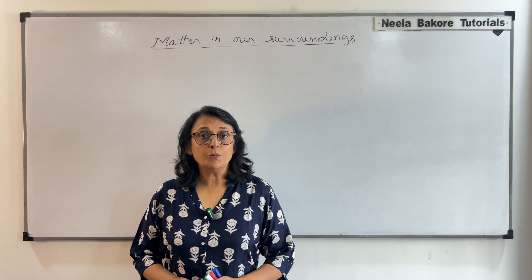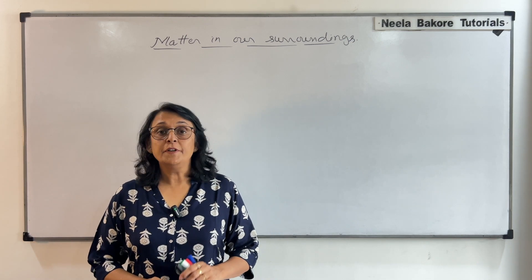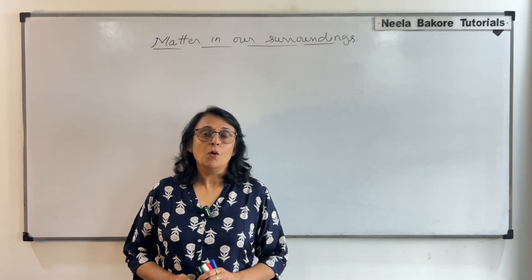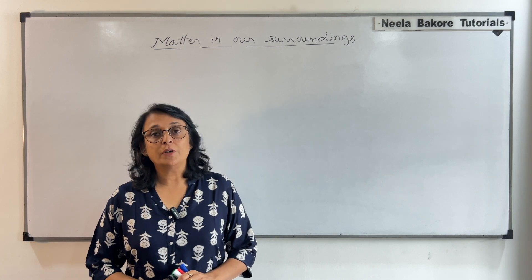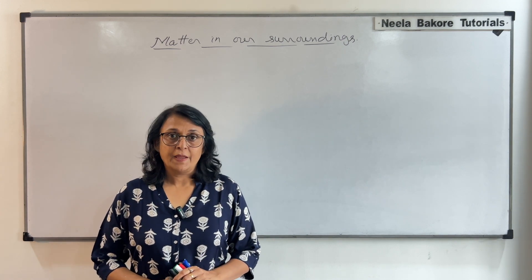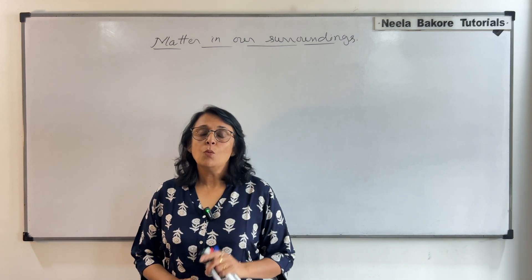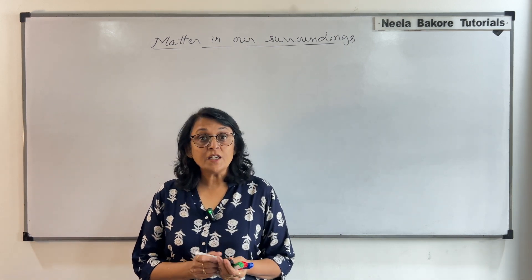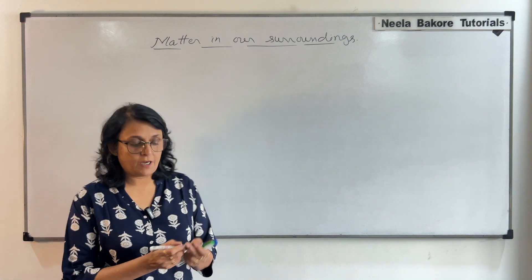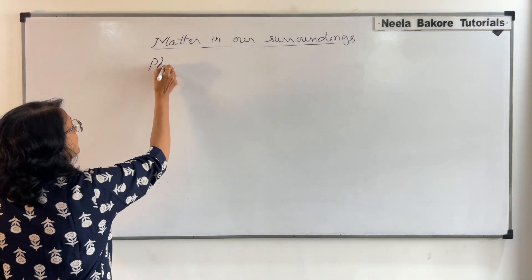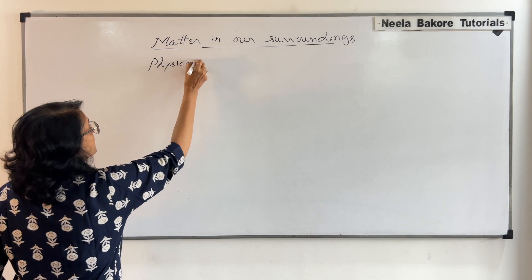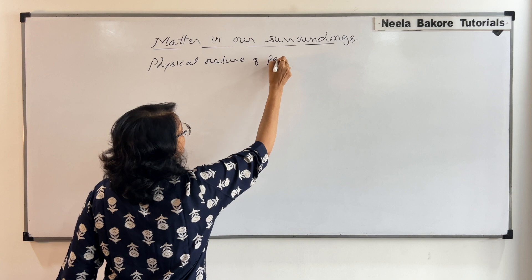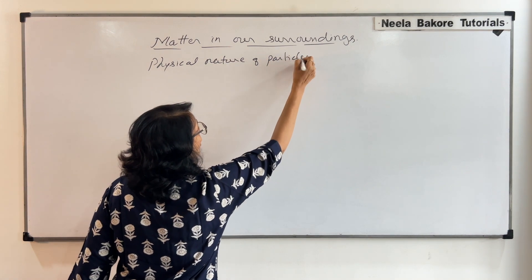In the previous lecture we discussed the definition of matter and what ancient philosophers said, as well as what modern scientists say. Now we are starting with how modern scientists have classified matter, and we will be talking about physical properties — specifically, the physical nature of particles of matter.